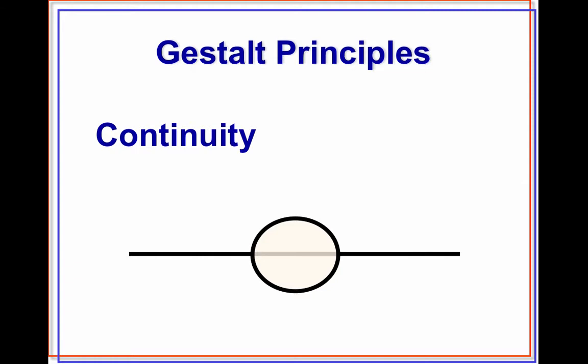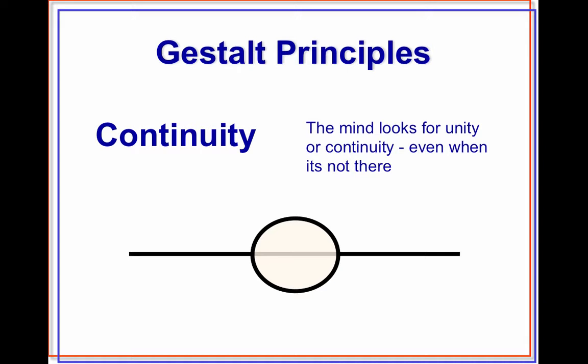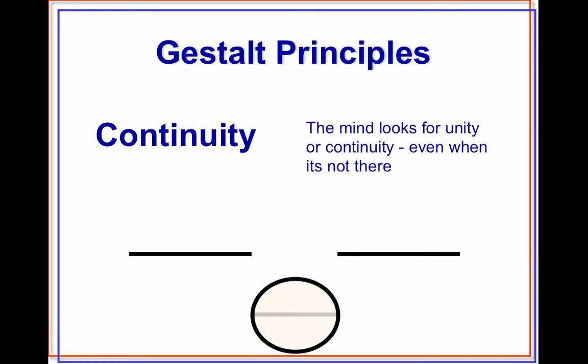Another Gestalt principle is called continuity. The mind looks for unity or continuity even when it's not there. For example, when we look at this picture, it appears to be a line going through a circle or an egg. But when we drop away the circle, we can see it's actually two lines on either side of the circle.